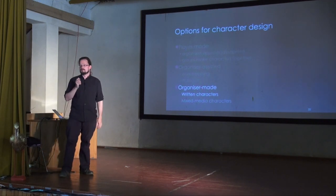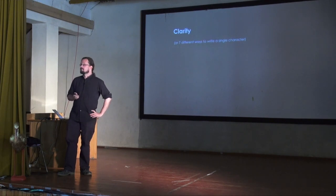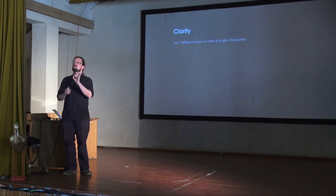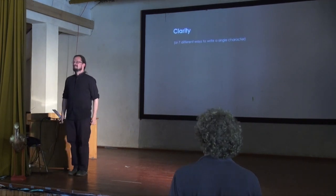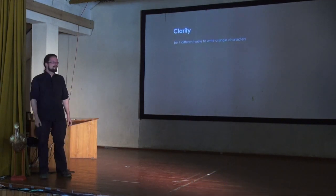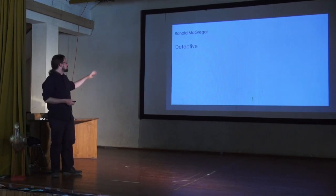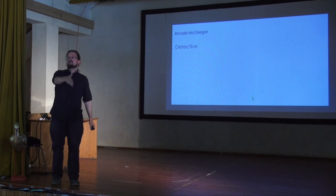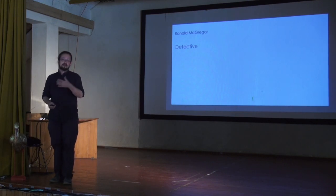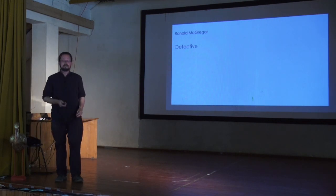Let me give seven examples of how to communicate a character, all based on different ways of describing the same character. Our character is Ronald McGregor, the detective. Actually, these two things might be enough — I know my name is Ronald McGregor, I know I'm a detective, so if there's a murder or something fishy happens, I know what to do. This is as bare bones as it gets, but for some LARPs it works.